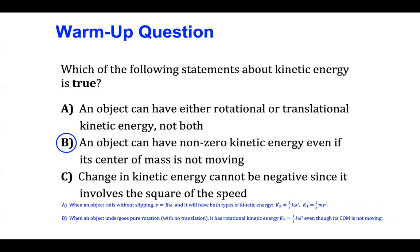Statement B is true because when an object undergoes pure rotational motion with no translation, it has rotational kinetic energy even though it's not translating. So an example might be some type of round object that is rotating about a fixed axis of rotation. It's just spinning around about that axis, but it's not moving left or right or up and down in a translational sense.